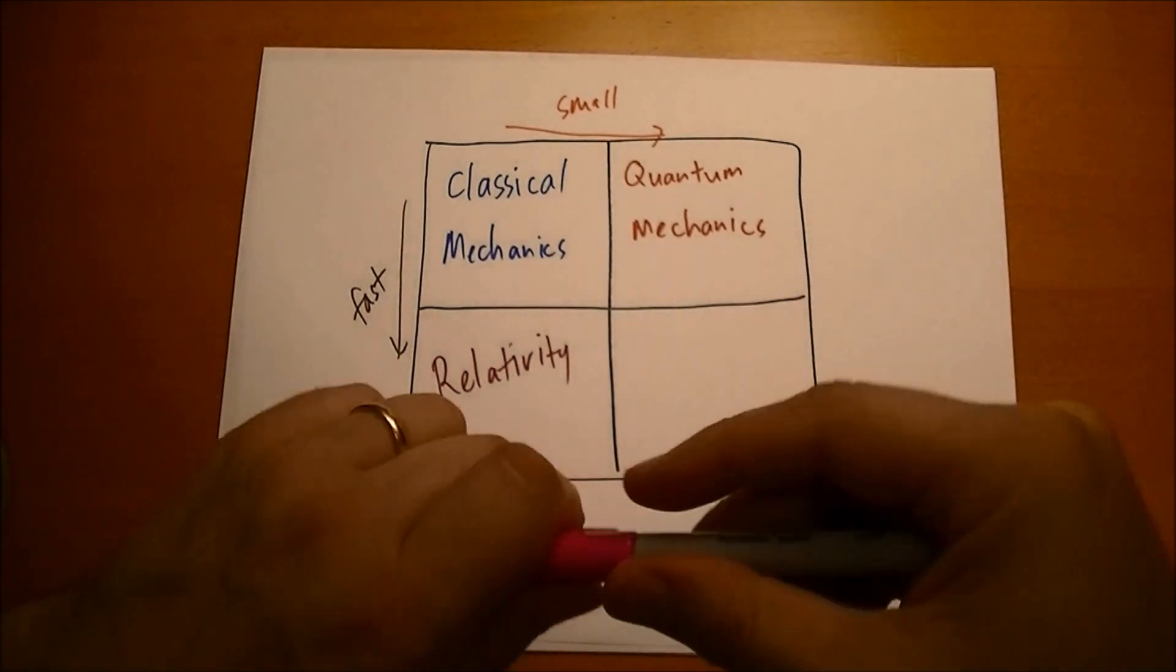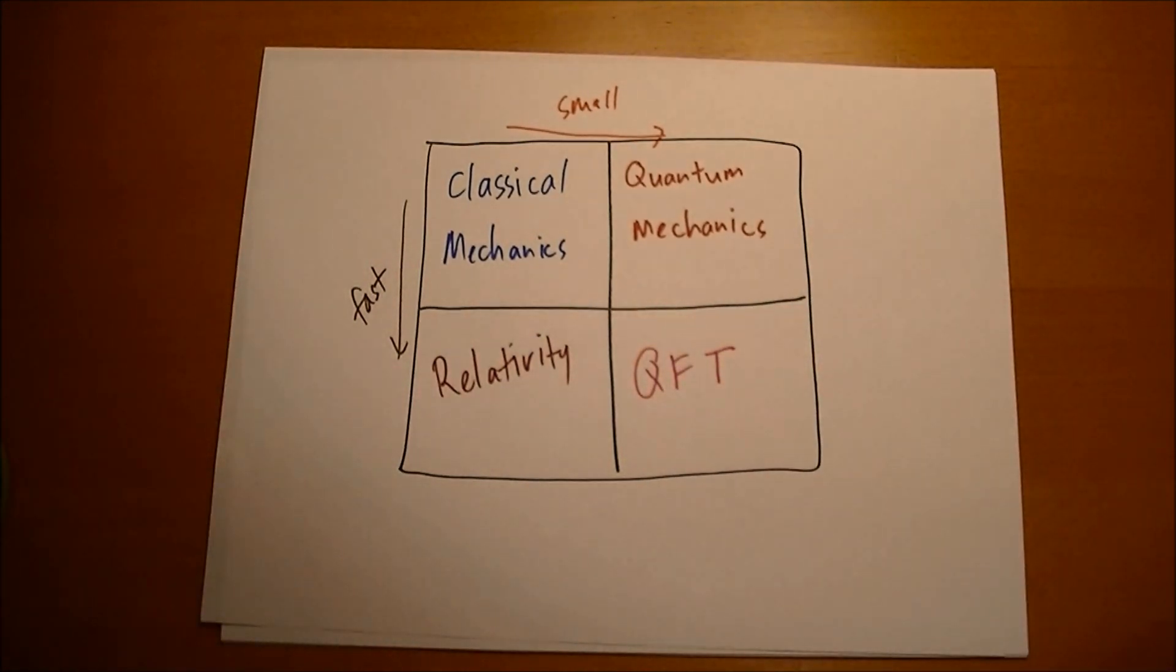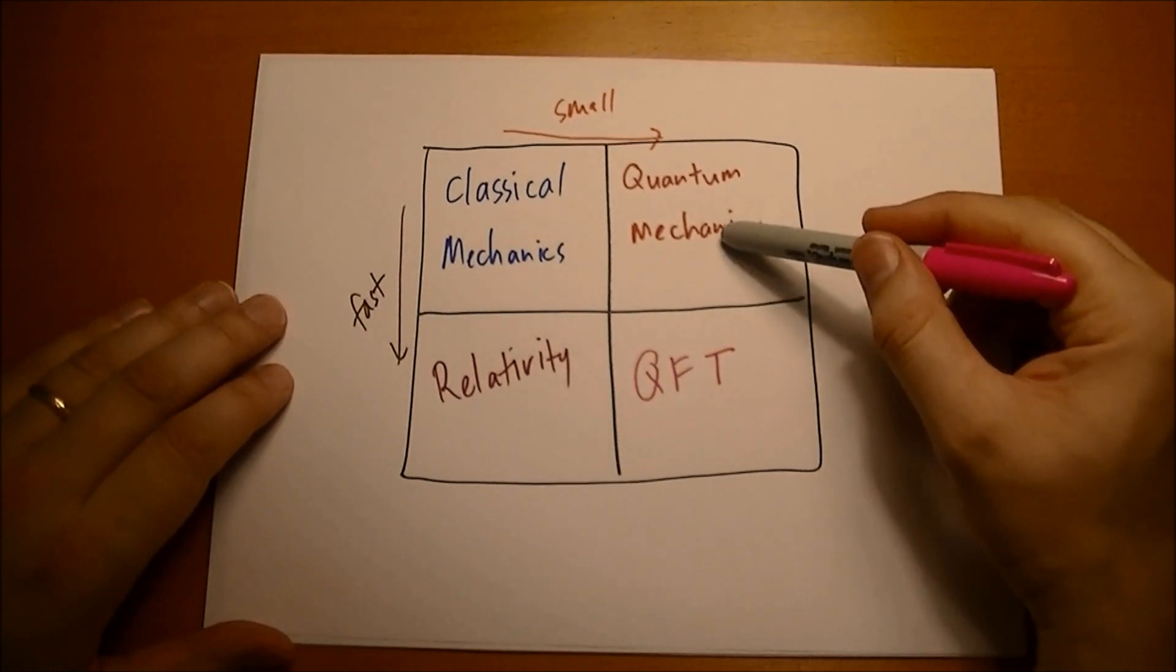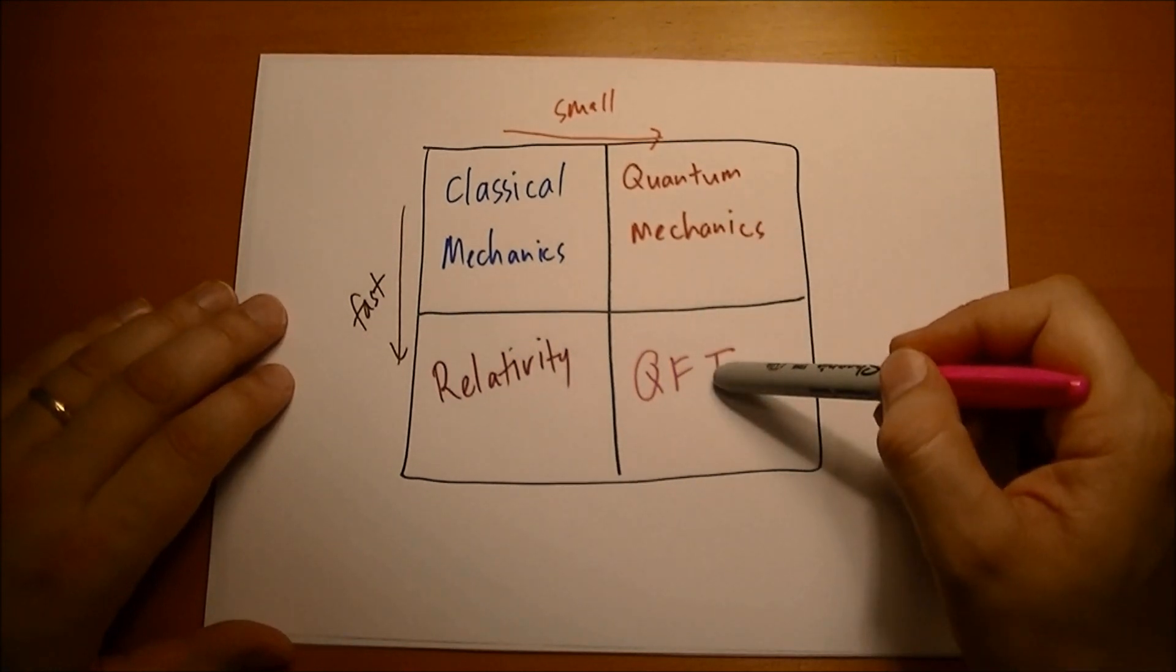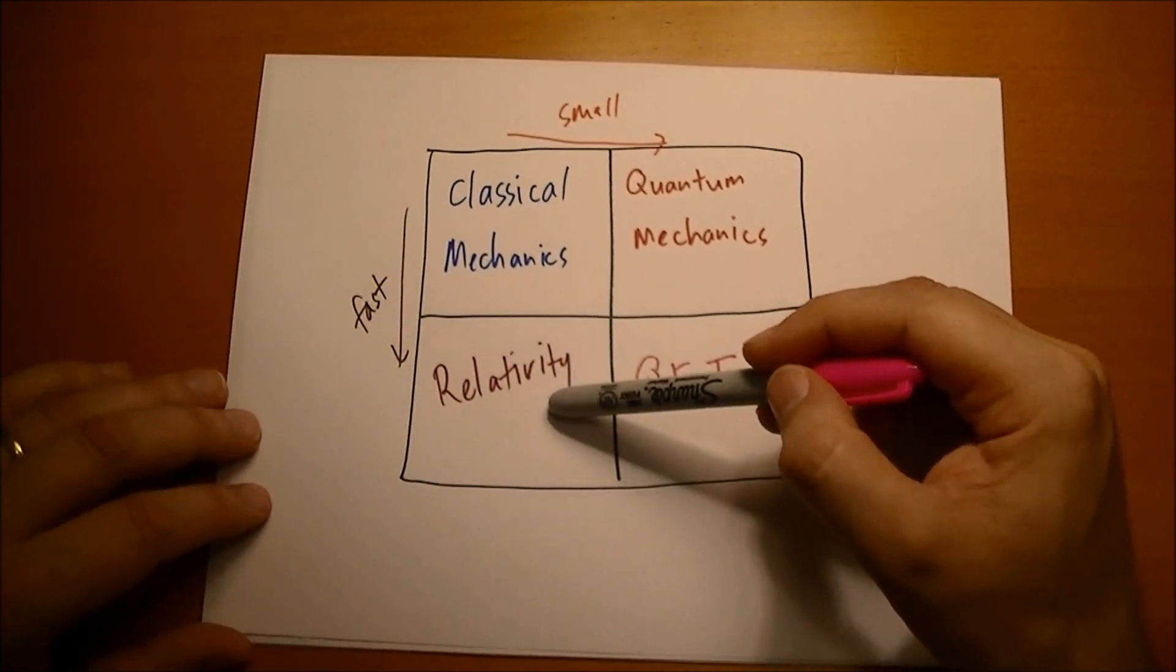And then if you combine the two together you get something called quantum field theory. Now we're not going to touch on quantum mechanics. I might mention it a couple times. We're not going to talk about this at all. And we're going to touch on relativity at the very end of the course.